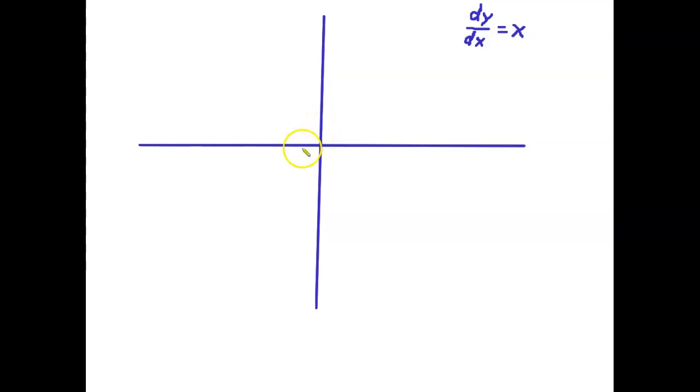So let's start with this point over here. Over here, the x-coordinate is zero, so the slope is also zero. So I just draw a tiny little horizontal piece. Slope here is also zero. Slope here is also zero. Slope here is also zero, right?